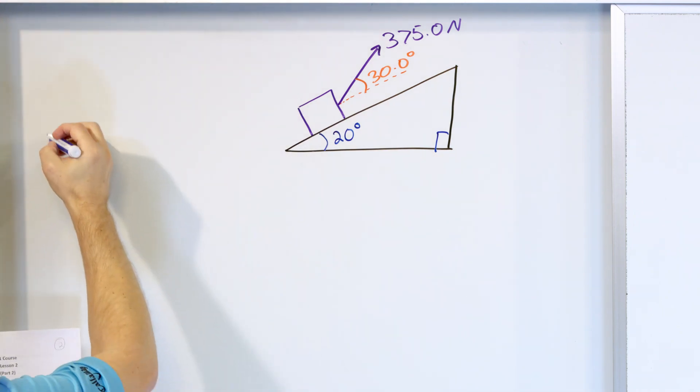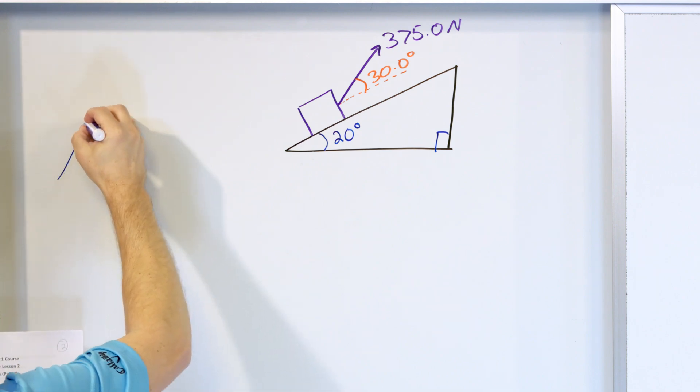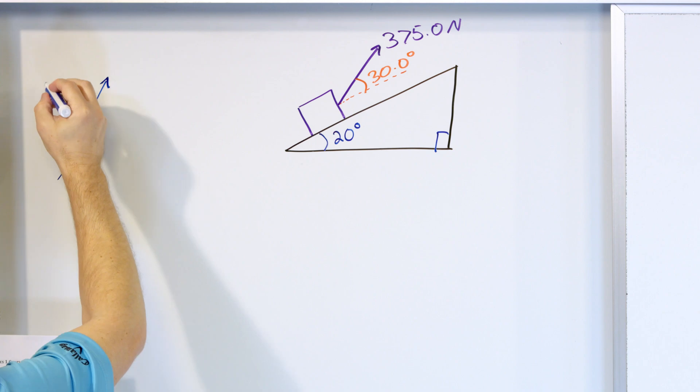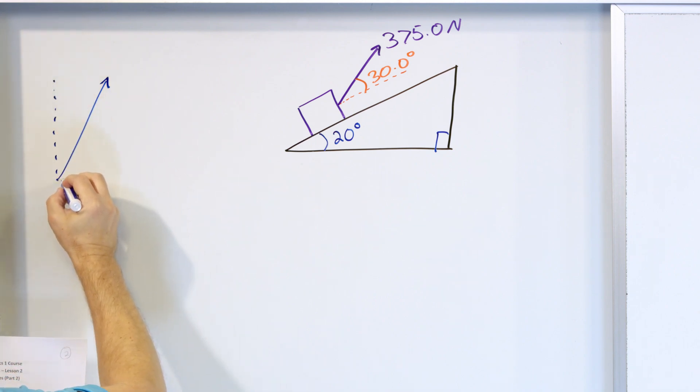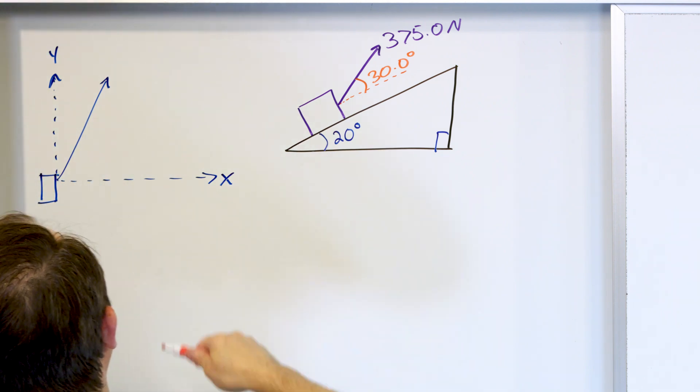So what we basically have here is a situation where we have this force kind of up like this. And of course, there's always an invisible X, Y axis, always, you can just put it anywhere. So here's X and here's Y. And so we have some force. And of course, it's acting on a trunk or whatever, which can be at the origin.